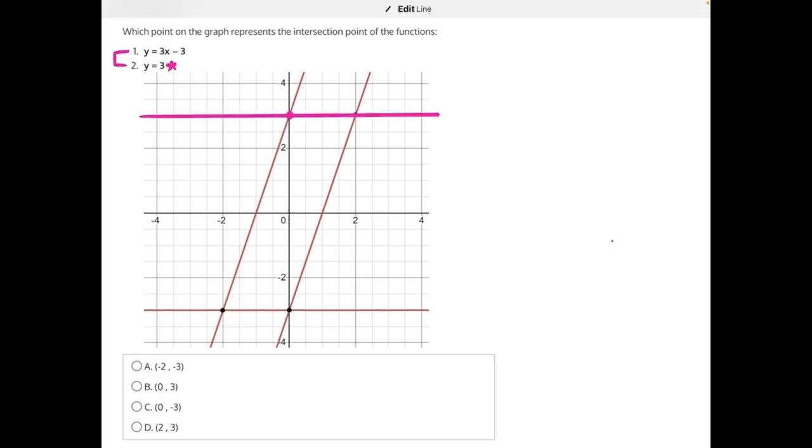Then our other linear function has a y-intercept of negative 3, which is all the way down here. And the only two graphs that have a y-intercept of negative 3 is this horizontal line, which we know is not the graph that we're looking for because this function has a slope. So we're actually looking for this one right here, which has a positive slope of 3.